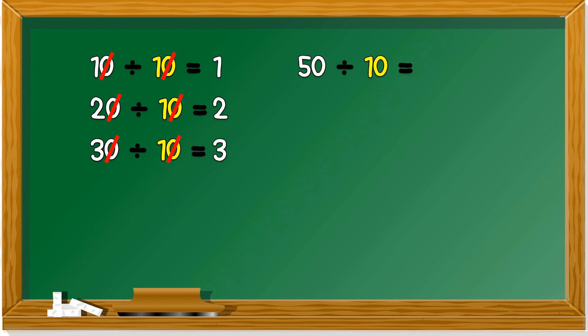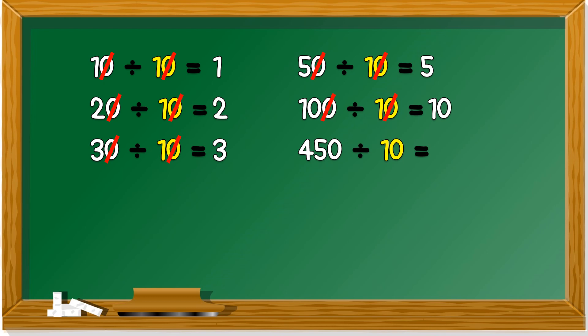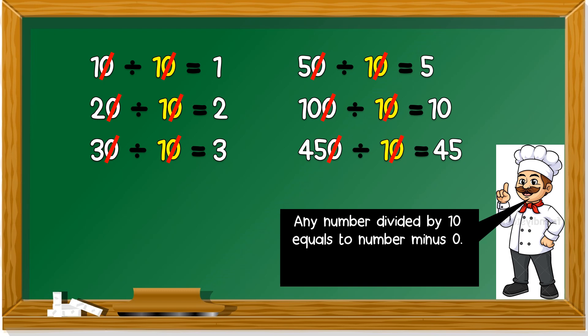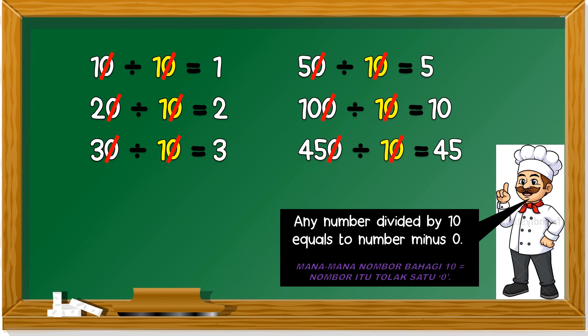How about 50? 50 divided by 10 — cut off one zero from each — we get 5. How about 100? Remember, cut off only one zero from each, so the answer is 10. How about 450? Cut off one zero, we get 45. Any number divided by 10 equals to the number minus a zero — mana-mana nombor bahagi 10 sama dengan nombor itu tolak 1 kosong.